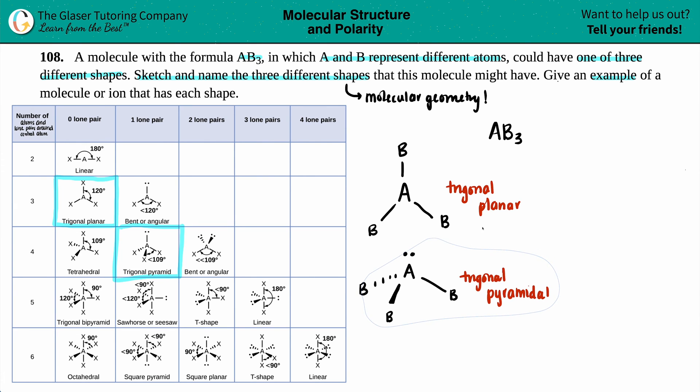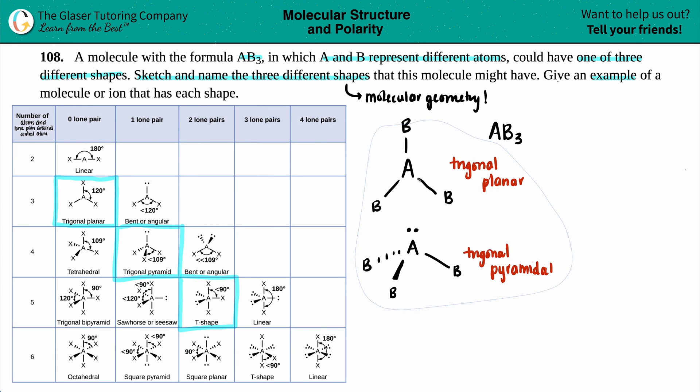Okay. And then the last one, I got to find one more with three of them. Seems like right here. There we go. T-shape. And in order to get that one in.